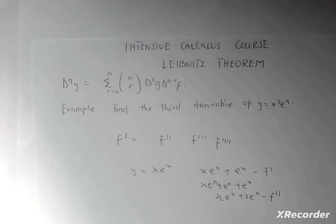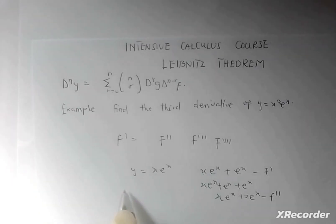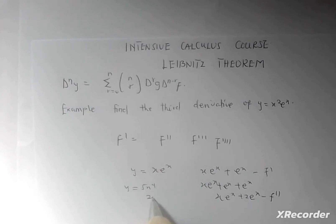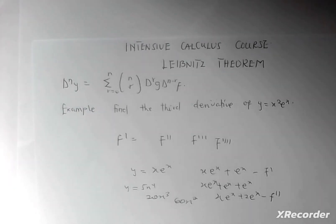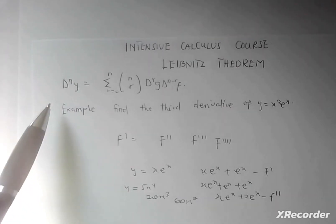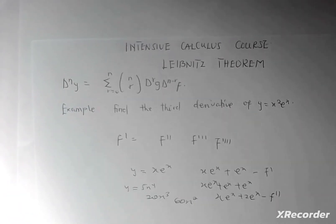Unlike normal constant and polynomial functions, which you can differentiate severally and are very simple — for example, y = 5x^4 gives 20x^3, then 60x^2, and so on — assuming you have been given a product of two functions and asked to find six derivatives, it is going to be very stressful. So Leibniz brought about a theorem called the Leibniz theorem.